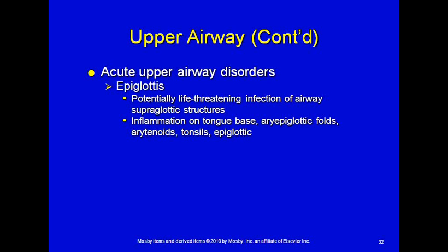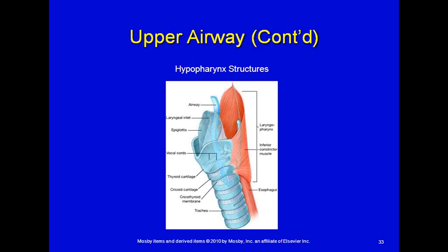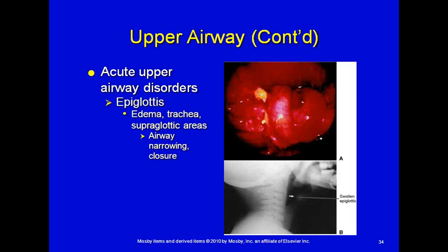Epiglottitis is a potentially life-threatening infection of the supraglottic structures of the airway. It includes inflammation of the base of the tongue, aryepiglottic folds, arytenoids, tonsils, and epiglottic tissue. The swelling can be significant enough to cause complete airway obstruction. As shown in this picture, it would be very difficult to even identify the structures if you tried to intubate, with a swollen epiglottis. The epiglottis is a leaf-shaped structure that covers the glottic opening when you swallow; if it becomes extremely red and inflamed, it may completely obstruct the opening.